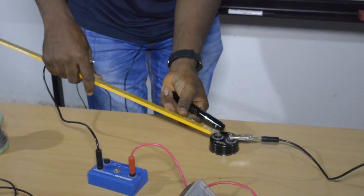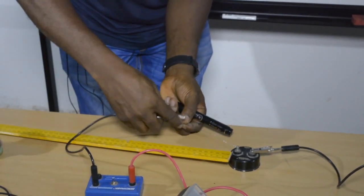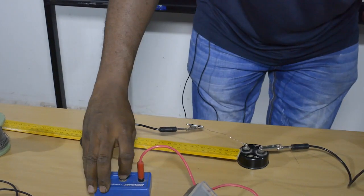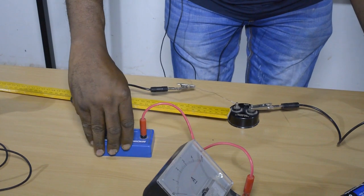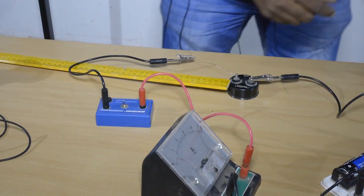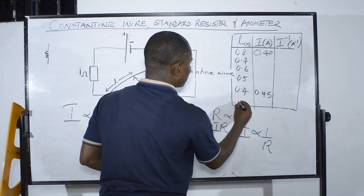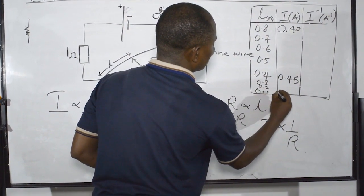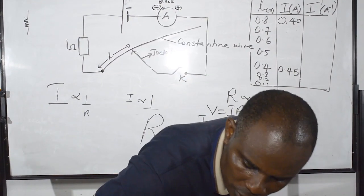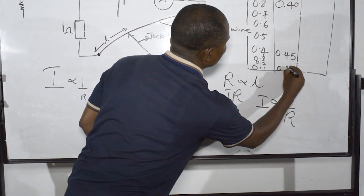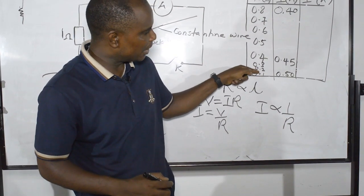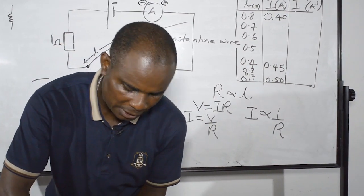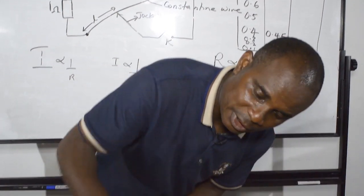Now let me put it at 10 centimeters — that is 0.1 meters. I put it right here at 10 cm. Now you see it has gone up to even 0.5 amps. So when I drop it to 10 cm, the current has gone to almost 0.5. The more I reduce the length, the more the current is increasing — that is the relationship.